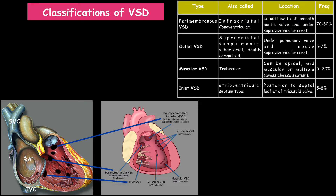Now let's see the various types of VSDs based on their location. First, the inlet VSD, also called the atrioventricular septum type. It is located posterior to the septal leaflet of the tricuspid valve. We can see the VSD in this image, and the frequency is around 5 to 8%.